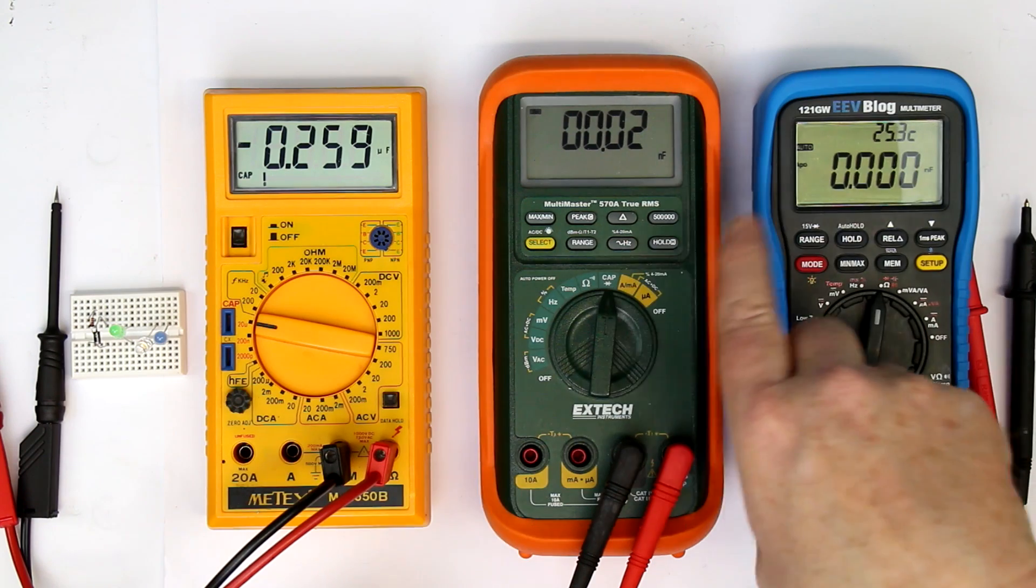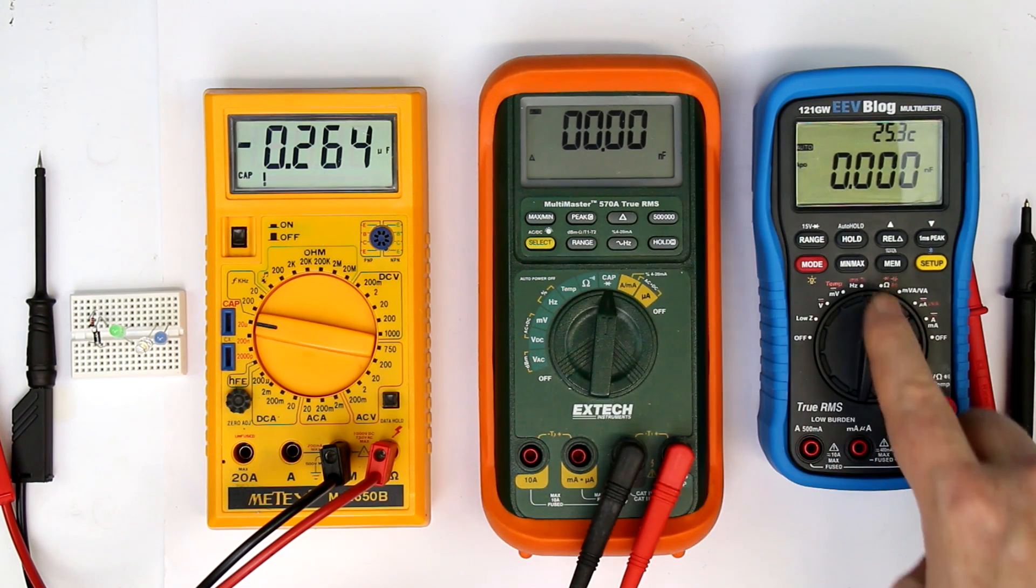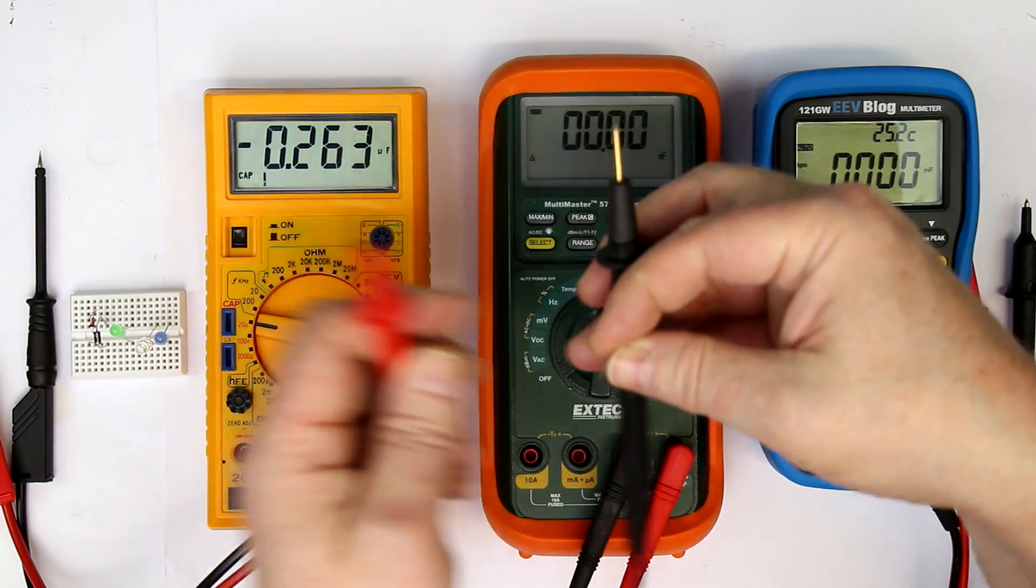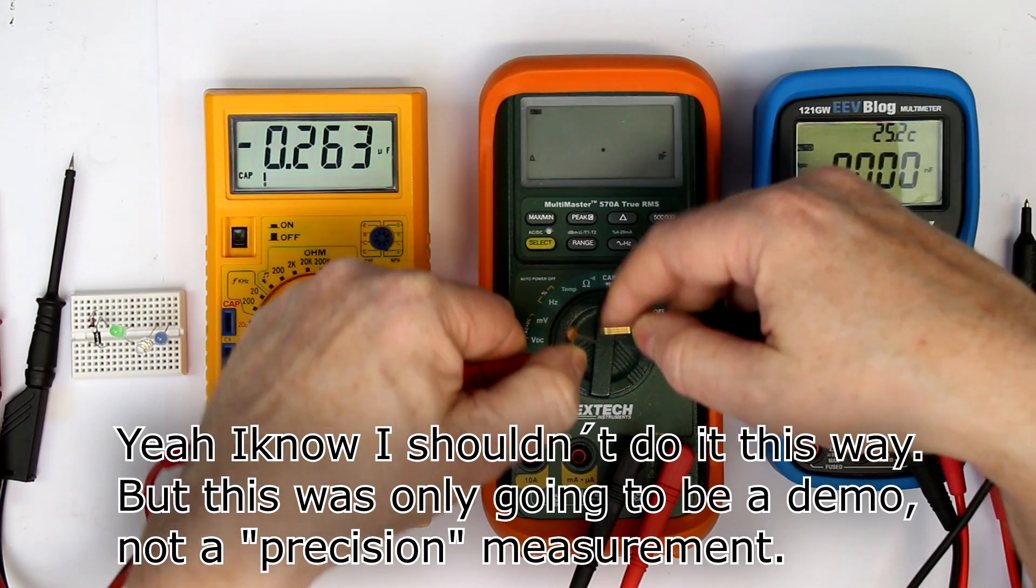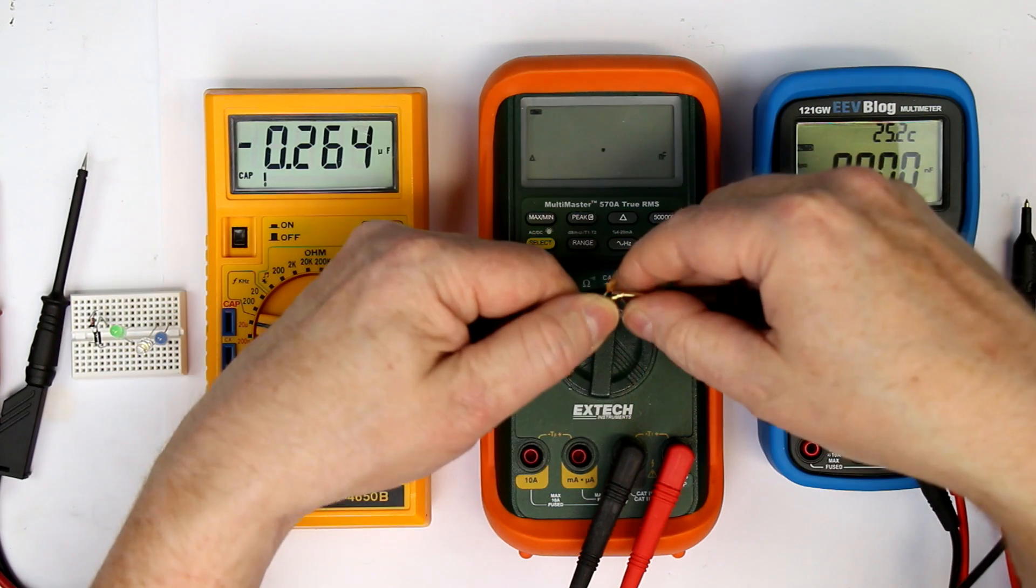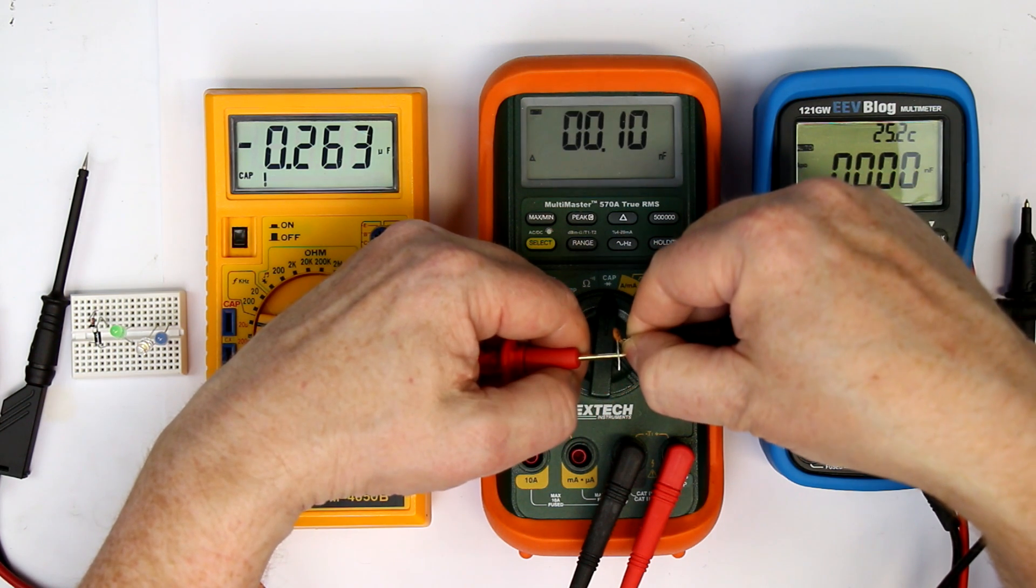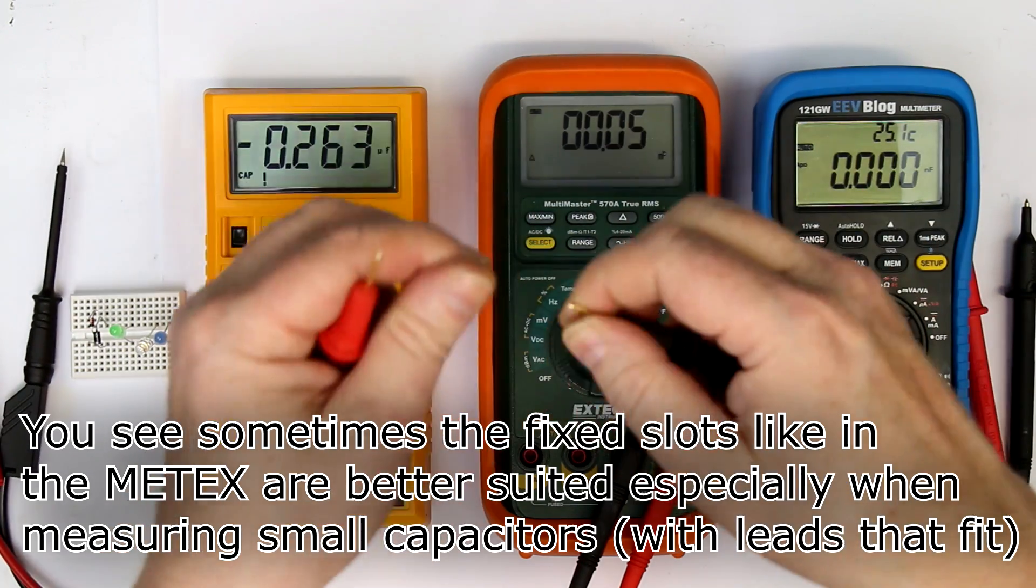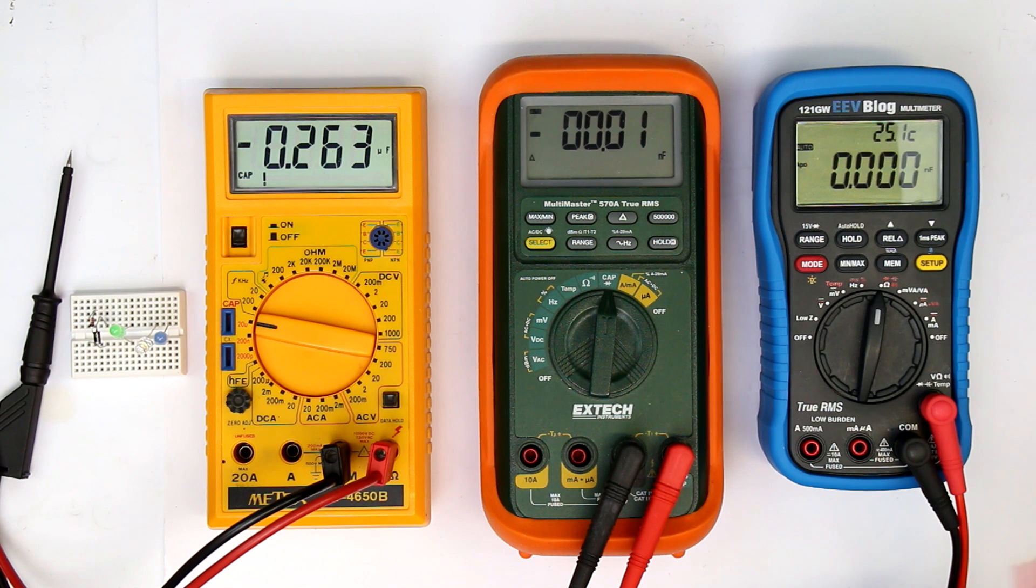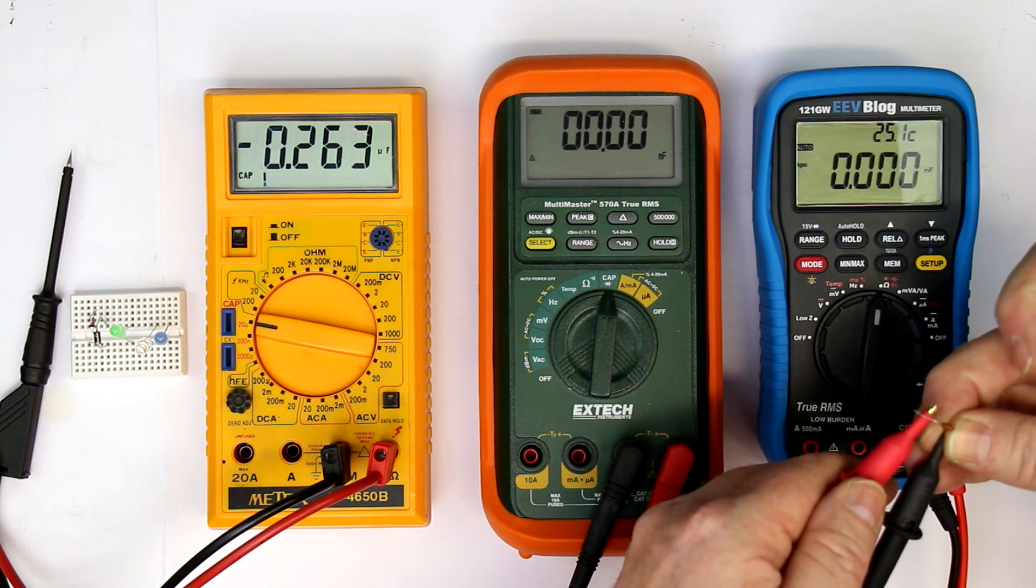We'll measure first a 100 picofarad. You usually shouldn't do this with your hands because you get extra capacitance and resistance. So, if I touch this with both hands, then the resistance of my hand just doesn't give a stable result. So, I can only touch it with one hand and we get 0.1 nanofarads with a resolution of 10 picofarads. And let's try the same here. This looks like one picofarad resolution, which would be quite nice, a factor of 10 or one order of magnitude better. But I can't get a value displayed.